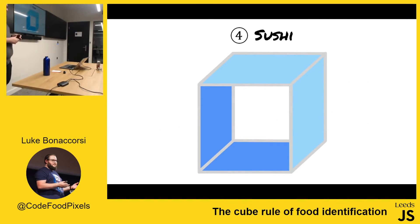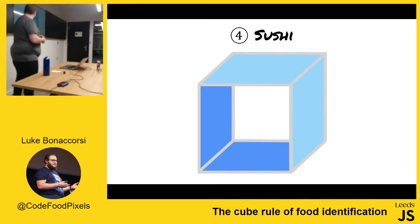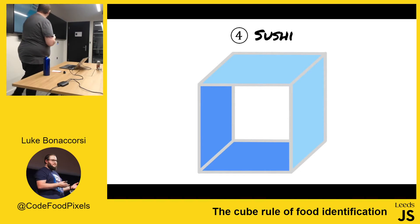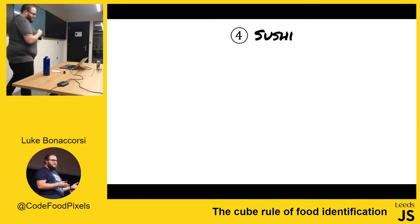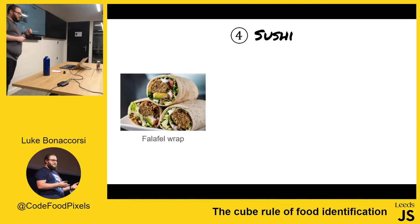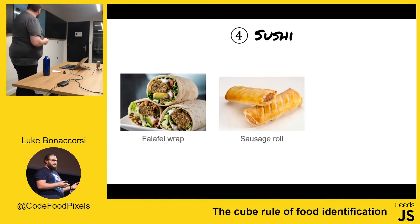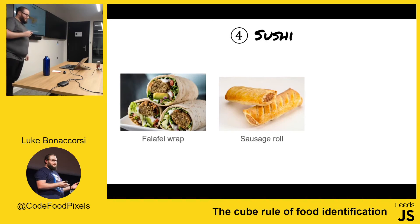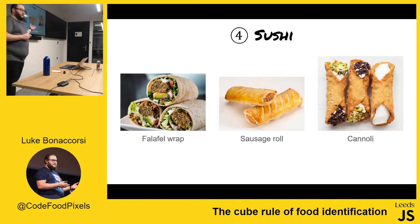Next up, we have sushi. So sushi is surrounded on four sides. Examples of this are falafel wraps, sausage rolls, and cannoli.